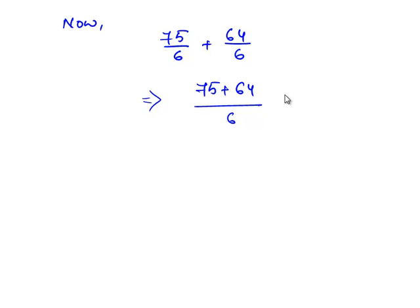Now we shall add the obtained equivalent rational numbers, that is 75/6 + 64/6. Since both the rational numbers have common denominator, we can directly add the numerators. This implies 75 + 64, which gives 139/6.